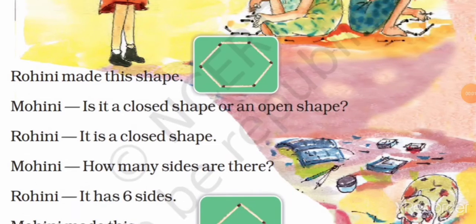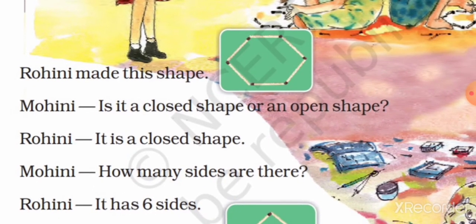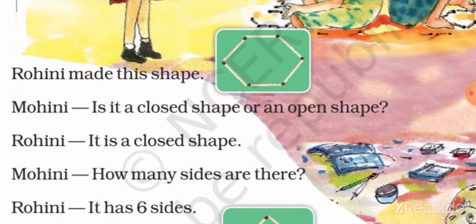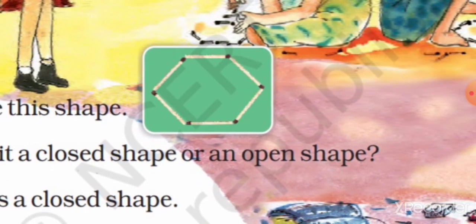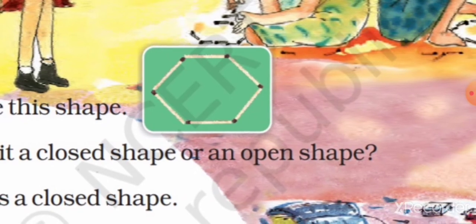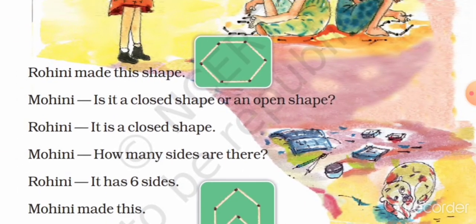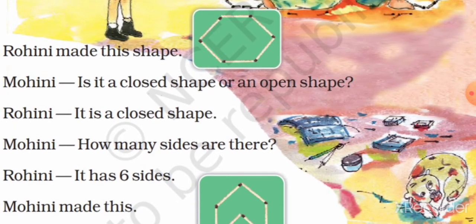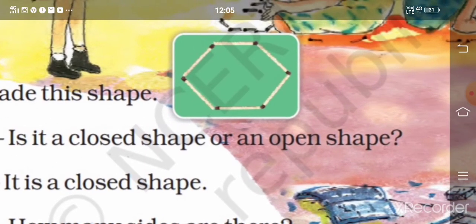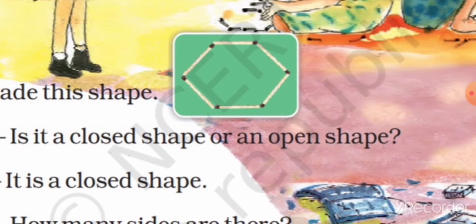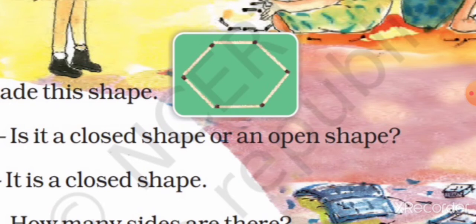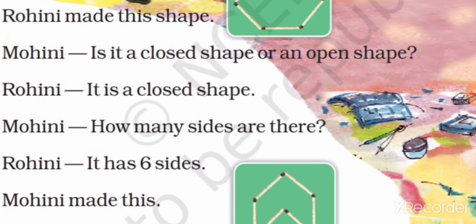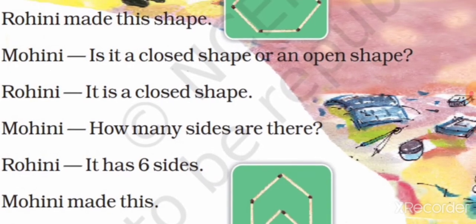Students, look at this shape — Rogini made this shape. Mogini asked: Is it a closed shape or an open shape? Students, look at the shape — is it closed or open? Yes, closed! Rogini said: It is a closed shape. Next, Mogini asked: How many sides are there? Students, look at this shape — one, two, three, four, five, six. There are six sides. Rogini told: It has six sides.